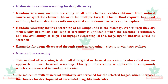Random screening for drug discovery involves screening all new chemical entities obtained from natural sources or synthetic chemical libraries for multiple targets. This method requires huge cost and time, but new structures with unexpected and unknown activity can be explored. It involves screening all compounds in a bioassay even if structurally dissimilar. It is applicable when the receptor is unknown, using high-throughput screening. Examples include streptomycin and tetracyclines.